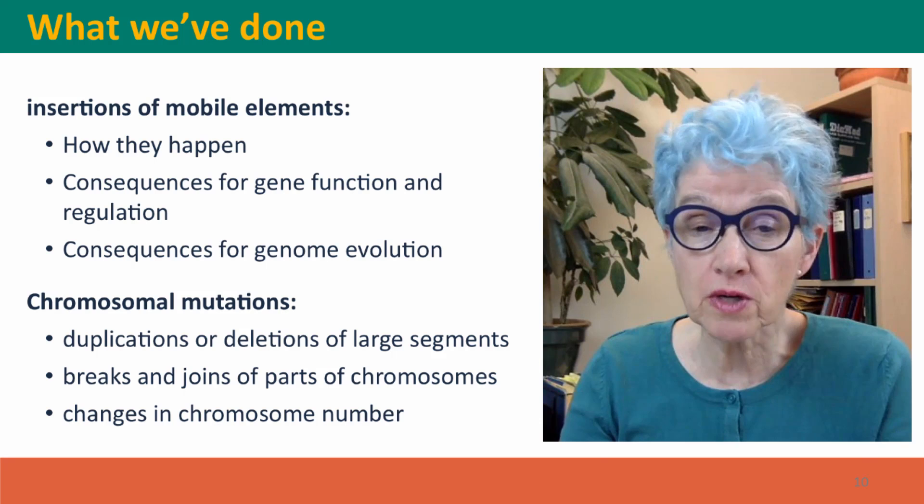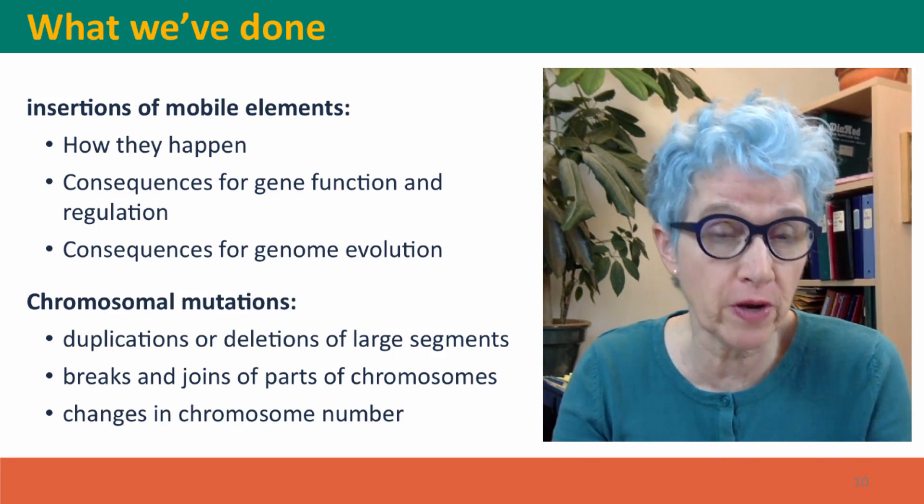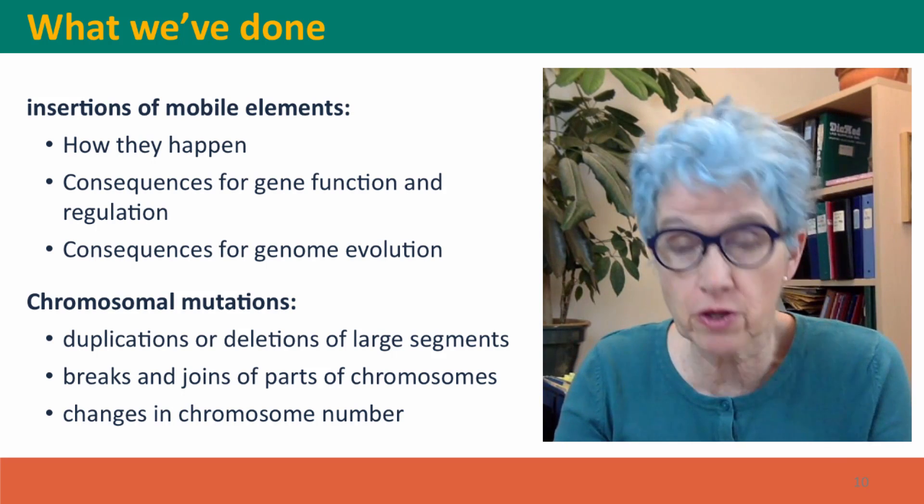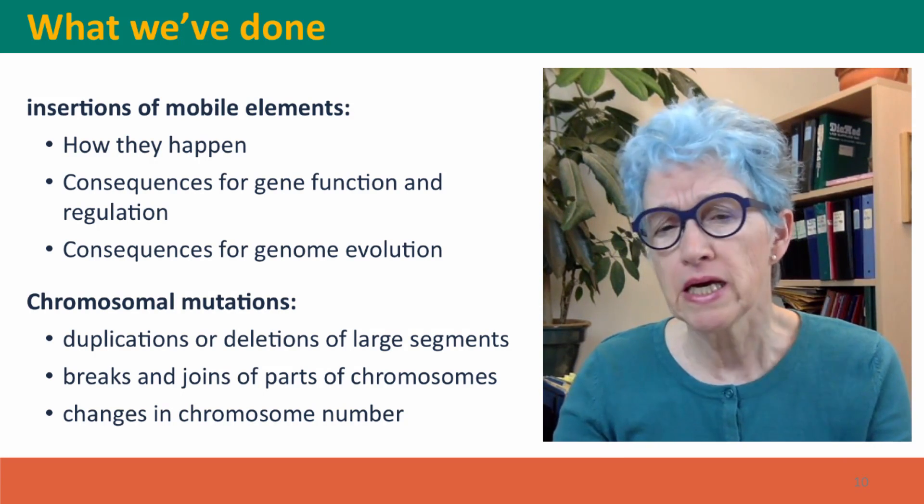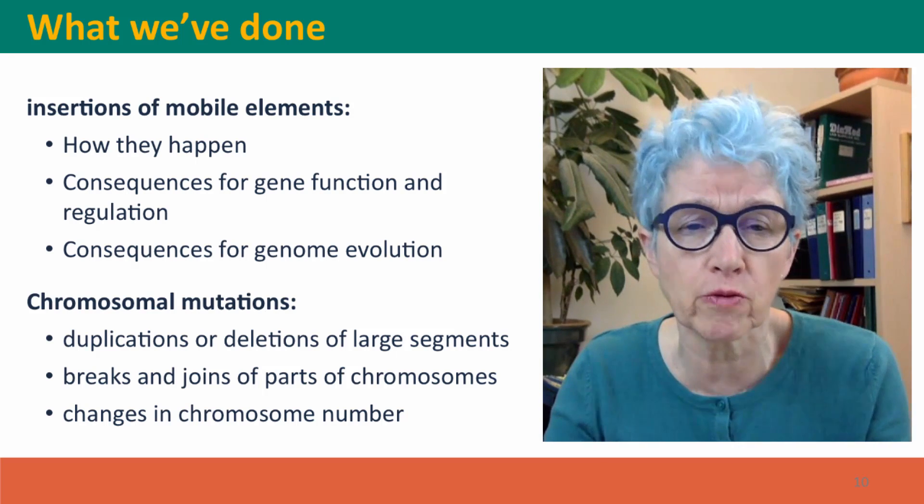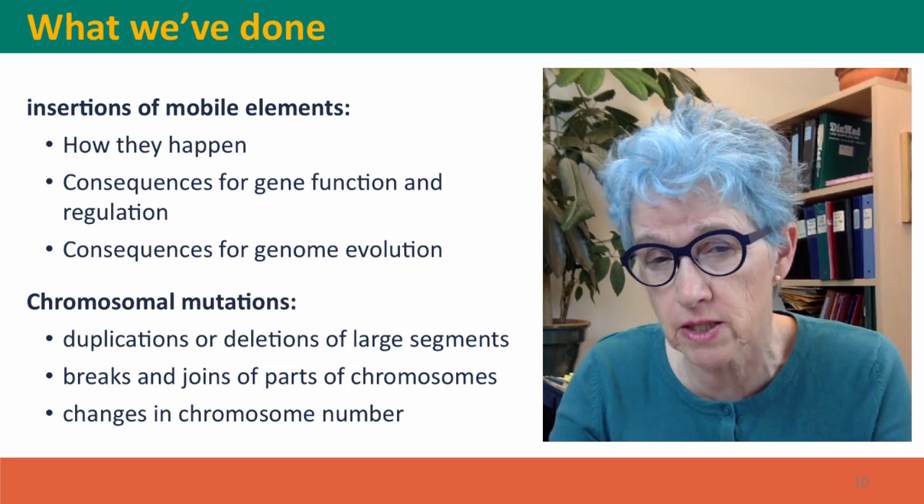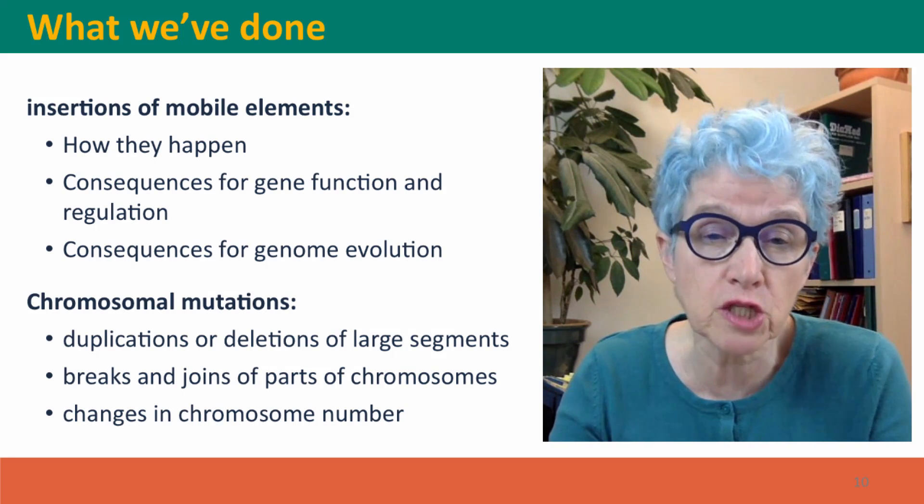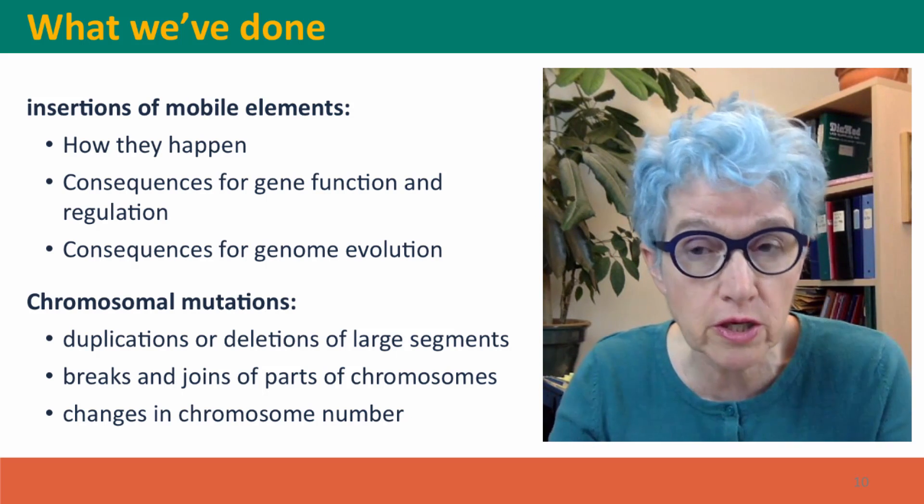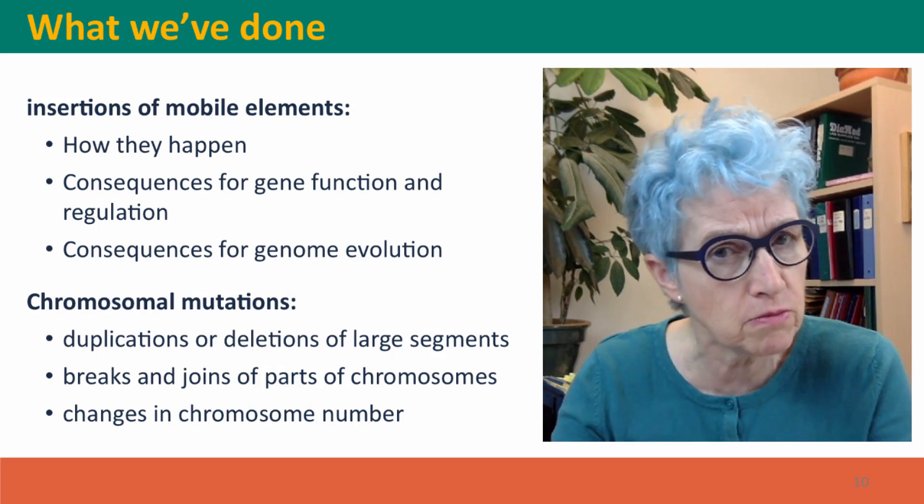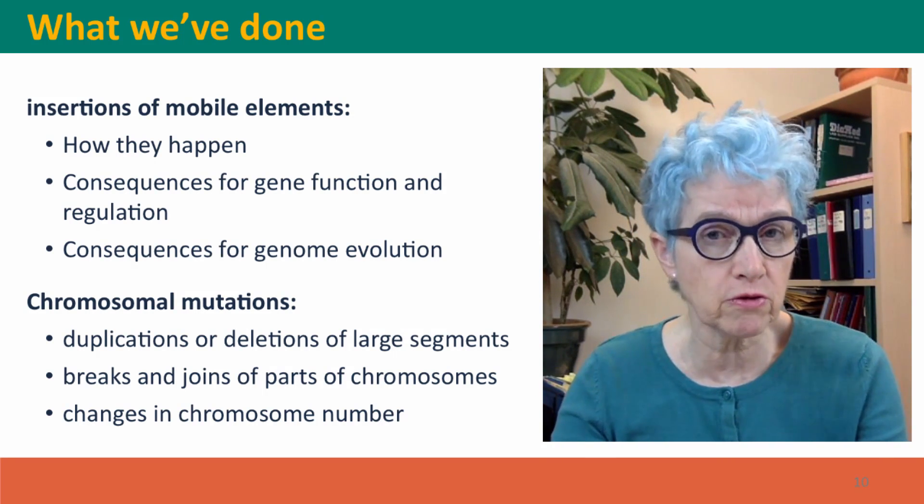So we've talked about two kinds of other ways that genomes can change apart from errors by DNA polymerase. We talked about insertions of mobile elements, which are a major factor in mutational change and genome evolution. We talked about how they happen—they actively insert themselves into other DNA sequences—and we talked about the consequences for gene function and gene regulation, usually destroying gene function but sometimes creating new kinds of gene regulation and consequences for genome evolution.